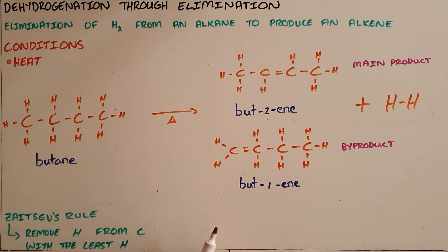The question of which hydrogens to remove is answered by Zaitsev's rule, which tells us to remove the hydrogen from the carbon that has the fewest hydrogens.